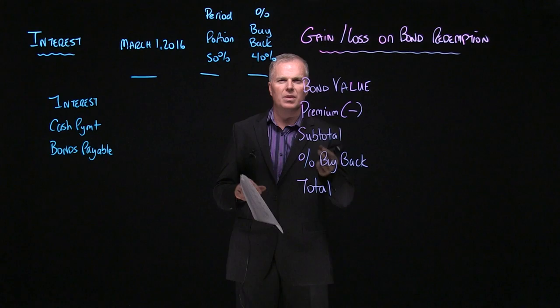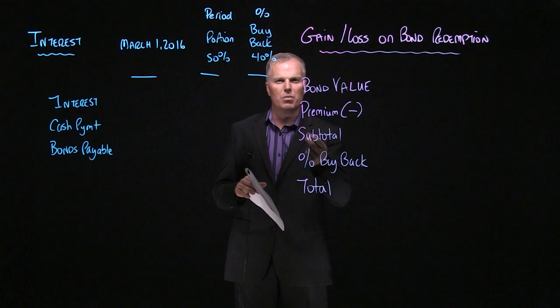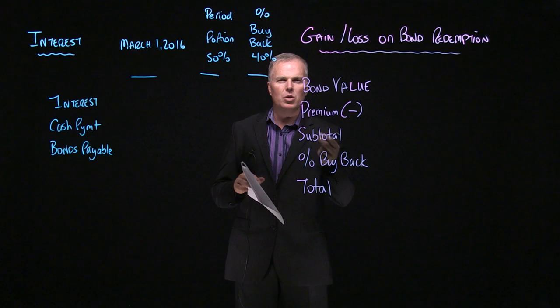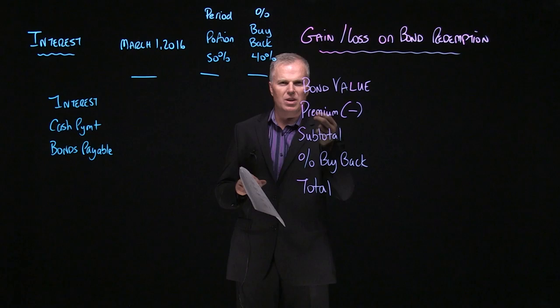We've got two templates here that will help us create the two proper journal entries related to that bond redemption. Now at this point in time, you are familiar with the question. You've calculated whether the bond is a premium or a discount. You've completed the effective interest schedule. You've also done the first bond interest payment entry. Now you have to deal with the bond redemption.